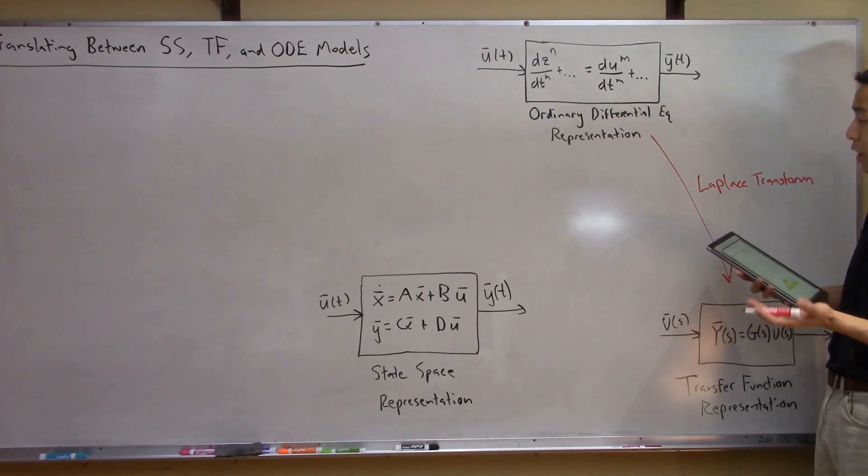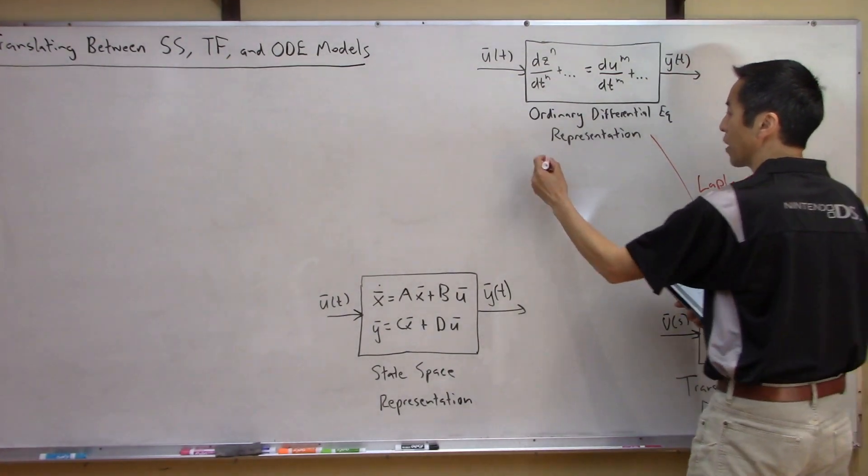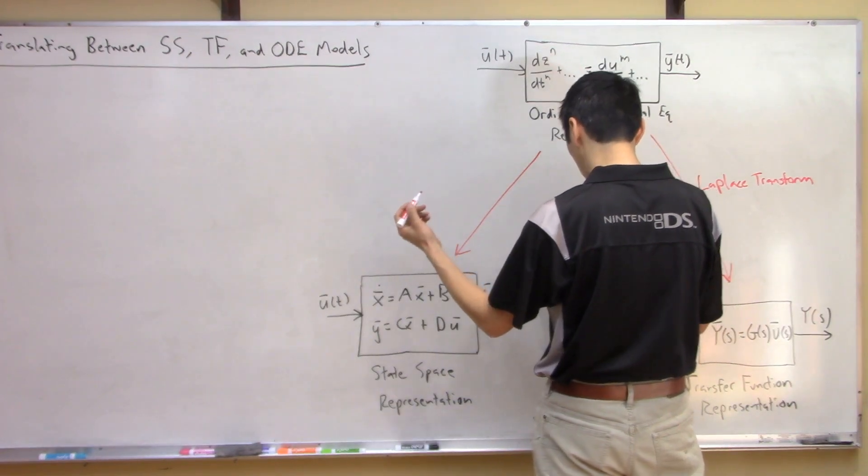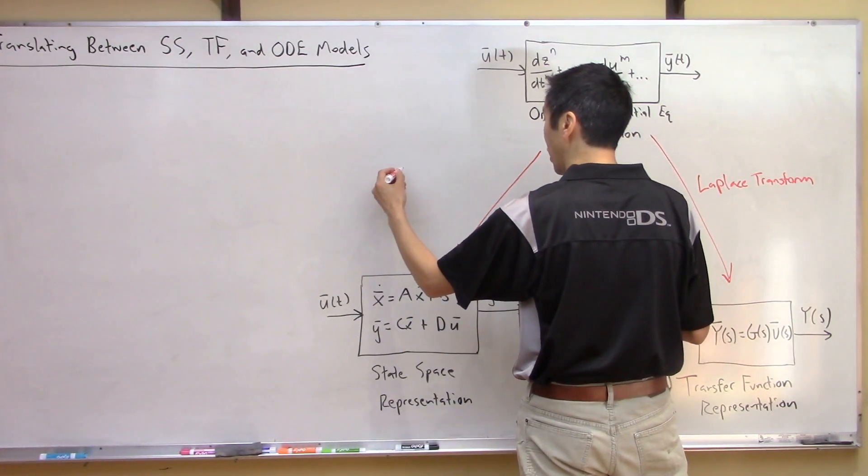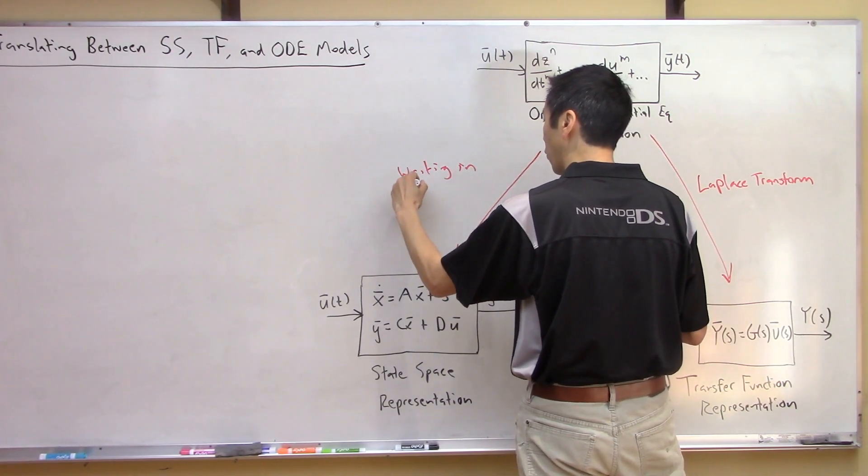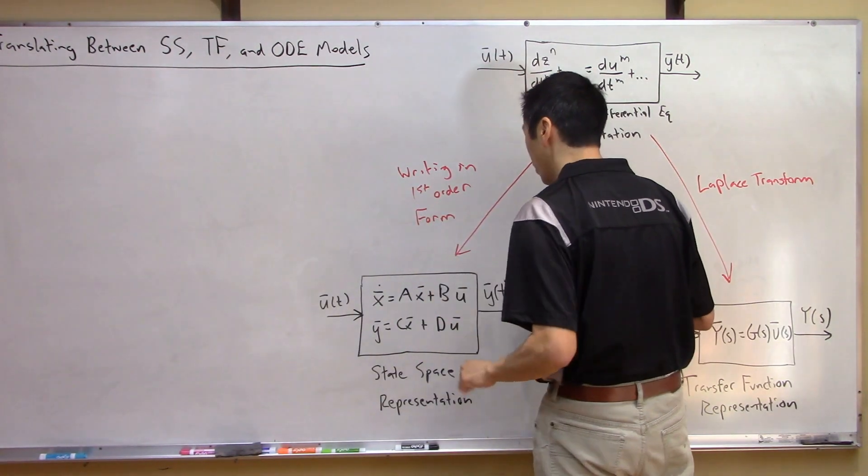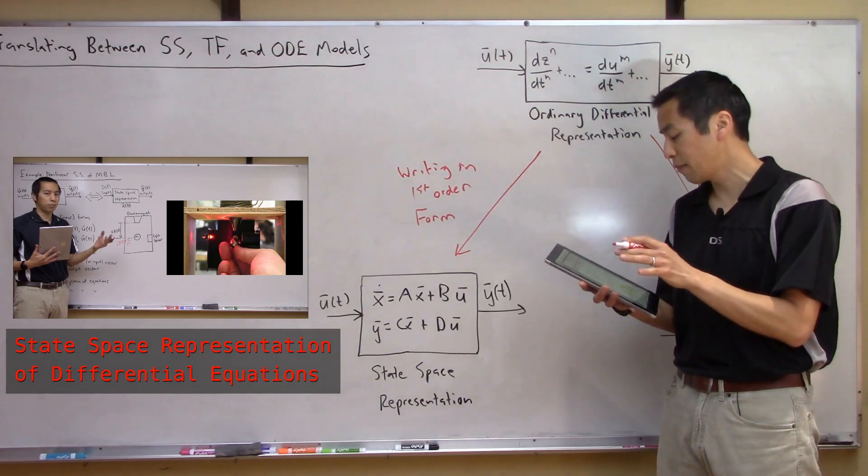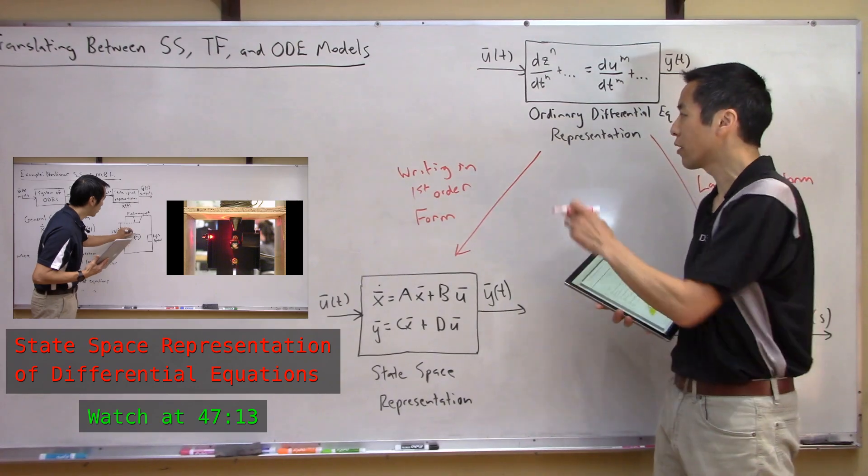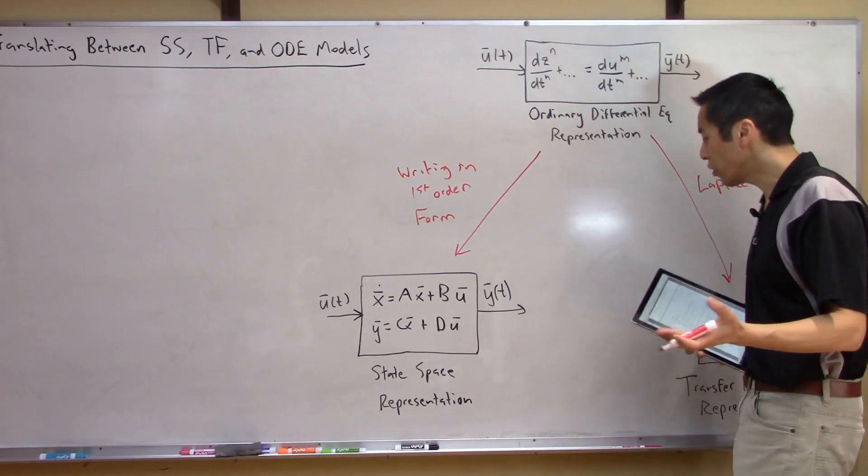Then what else did we talk about? Well how about if you had an ordinary differential equation and you wanted to get down to a state space so that's kind of moving in this direction right and we saw that this really is just involved using matrices and vectors and basically writing this in first order form. Okay and again we had a video in fact this was part of the state space video and in fact I'll flash up the timestamp exactly where we covered this part of the translation so we saw that this is how you can go from an ODE down to a state space.